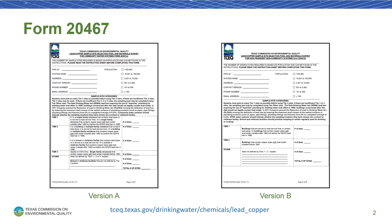There are two versions of this form. Version A is intended for Community Water Systems and Version B is intended for Non-Transient Non-Community Water Systems. You can find both versions of the form on the TCEQ Lead & Copper webpage shown at the bottom of this slide. This video provides instructions for Version A. If you're filling out the form for a non-community, non-transient system, then you'll need the video for Version B, which can also be found on the TCEQ Lead & Copper webpage.